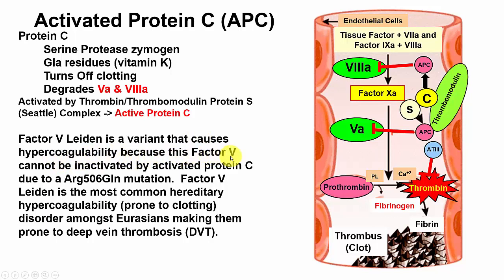Factor 5 Leiden is a variant that causes hypercoagulability because this Factor 5 cannot be inactivated by activated protein C — it is resistant to proteolysis. It has a mutation involving an arginine-to-glutamine substitution. Factor 5 Leiden is the most common hereditary clotting problem causing DVTs, and it is found in people of European (particularly Dutch) heritage. Leiden is a city in the Netherlands where this was discovered.